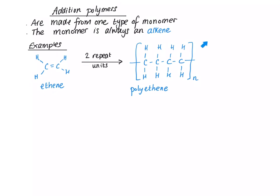In real life this chain goes on for millions and millions of carbon atoms, but we don't want to show that. So what we do is zoom in on two repeat units — this part is from one molecule of ethene and this part here is from another molecule of ethene.